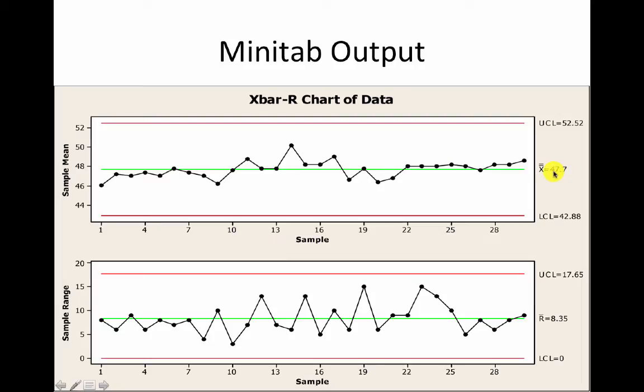And so that ultimately gives you this mean here, 47.7, which is this green line that runs across. And so then you have the values for each of these samples, which are the dots. The upper control limit is this red, and the lower control limit is this red down here.